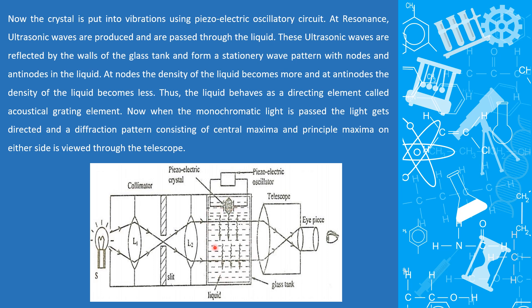When the monochromatic light is passed, the light gets diffracted and diffraction pattern consisting of central maxima and the principal maxima on either side is viewed through the telescope.